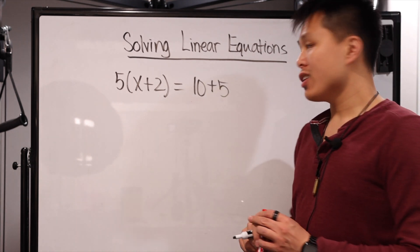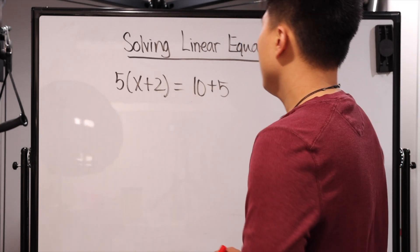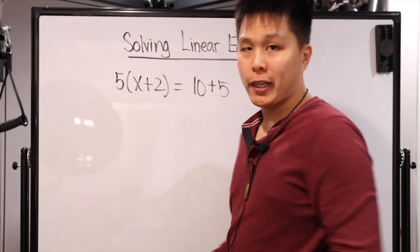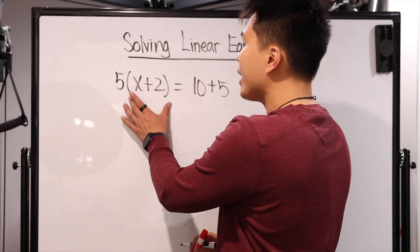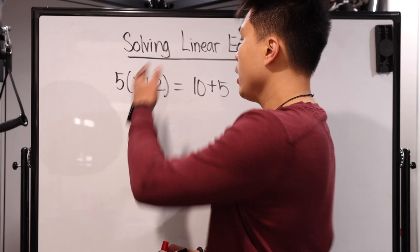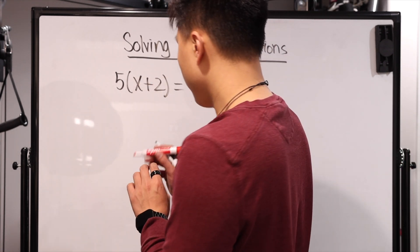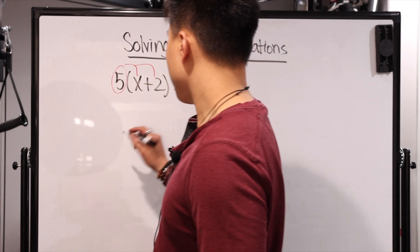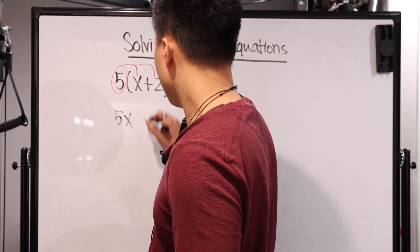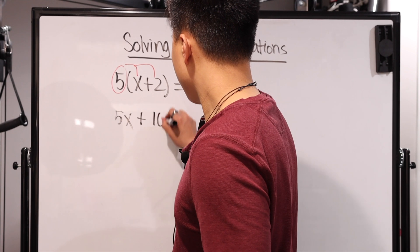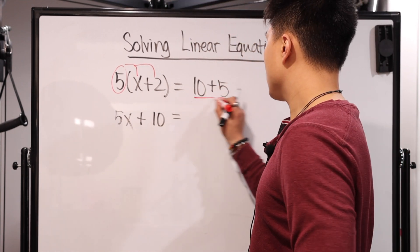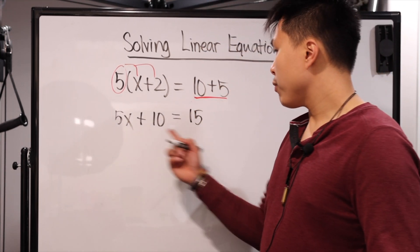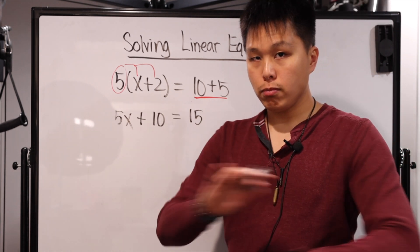Let's look at a second example. This one looks slightly more challenging, slightly more scary, but it's still the same thing. First step: simplify both sides. In this case you can't simplify inside the parentheses directly, but you do have multiplication — which is the distributive property. You have five times the quantity of x plus two. So we use distributive property: multiply five by both x and two, giving us 5x plus 10. On the other side, it's just a basic addition problem, so 10 plus 5 is 15. We cannot simplify further — step one is done.